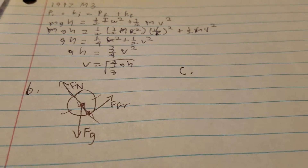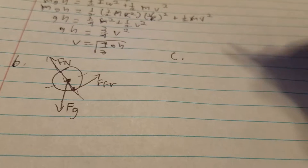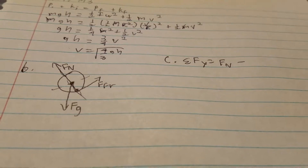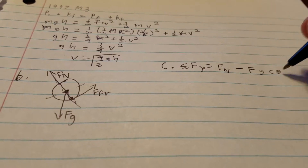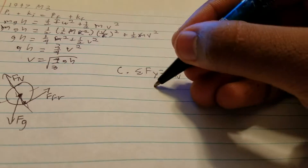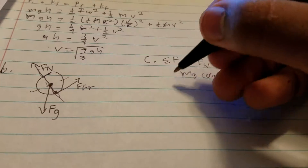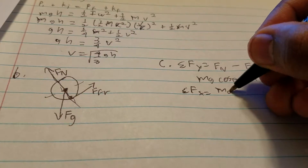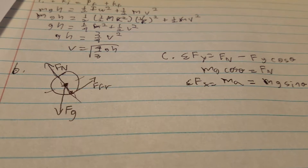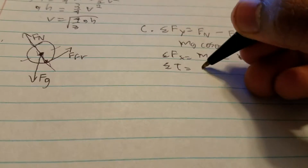For Part C, I have to show that the acceleration of the cylinder is two thirds g sin theta. To do this, I'll make force statements. Sigma Fy equals force normal minus Fg cosine theta, which gives us Fn equals Mg cos theta. And then sigma Fx equals Ma equals Mg sin theta minus the friction force.